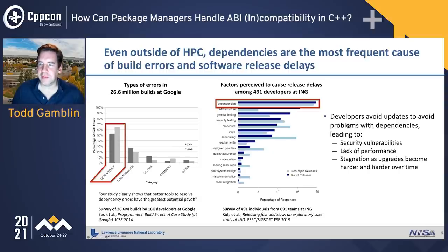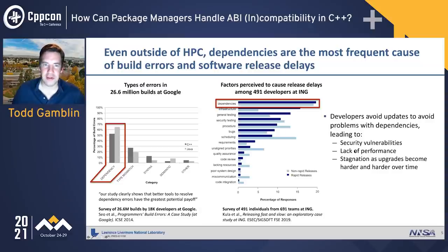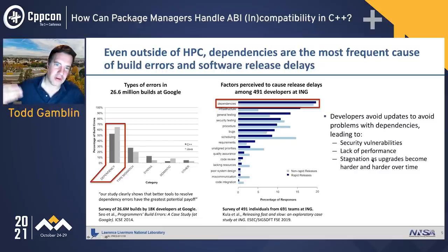They found that the result of this was that developers just avoid updates. They don't want to deal with dependency problems, so they keep around packages that have security vulnerabilities or don't perform as well as newer versions. That causes the code to stagnate, and it gets harder and harder to upgrade the more you hold your dependencies back.